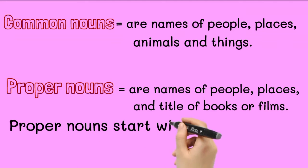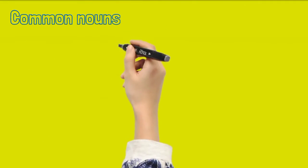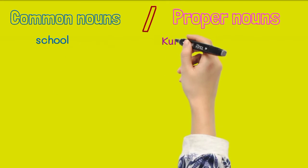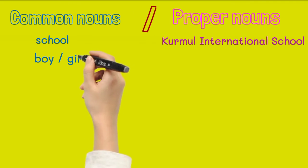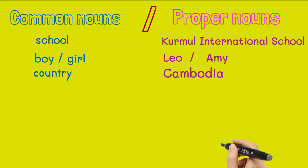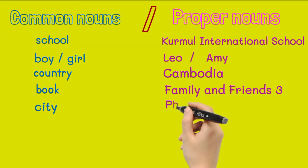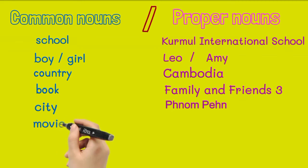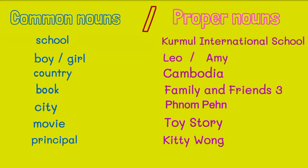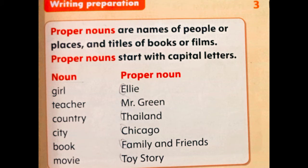Did you understand the meaning of common nouns and proper nouns? When we look at the two main types of nouns — proper nouns and common nouns — we can differentiate between the two. Common nouns name any person, place, thing, or idea. They are not capitalized unless they come at the beginning of a sentence. Proper nouns are the names of specific people, places, things, or ideas, and should always be capitalized. Don't forget to capitalize all parts of proper nouns.